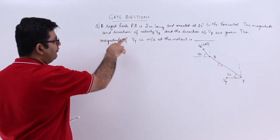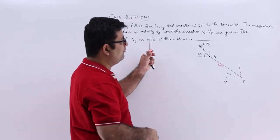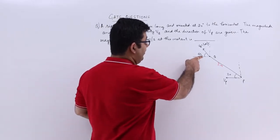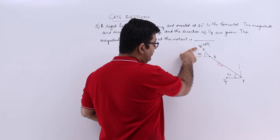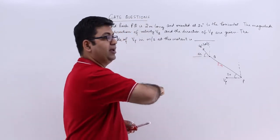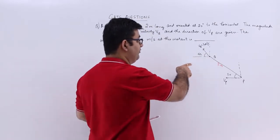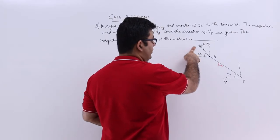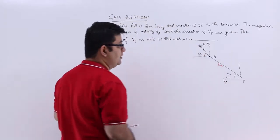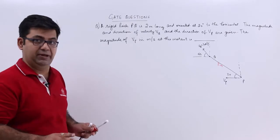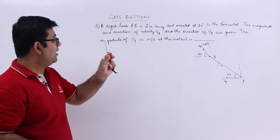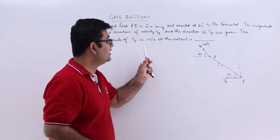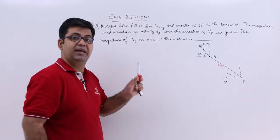The magnitude and direction of velocity vq and the direction of vp are given. vq has a magnitude of 1 meter per second at a horizontal angle of 45 degrees. The direction of vp is given but we don't know its magnitude. What is the magnitude of vp in meters per second at this particular instant?